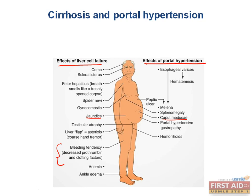The effects of portal hypertension — the mnemonic is gut, butt, and caput. You can have esophageal varices, hemorrhoids, and caput medusae. Additionally, patients develop peptic ulcers, splenomegaly, ascites, and gastropathy. Truly, there are many painful consequences to cirrhosis.